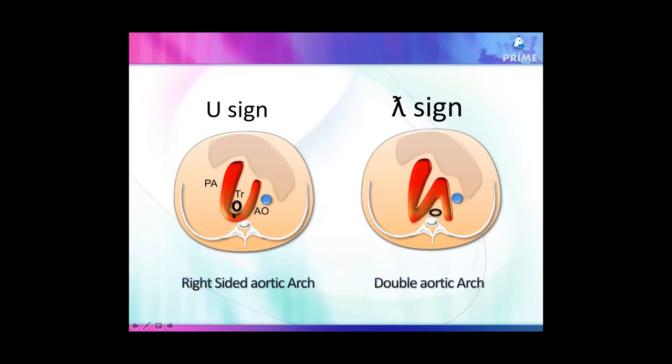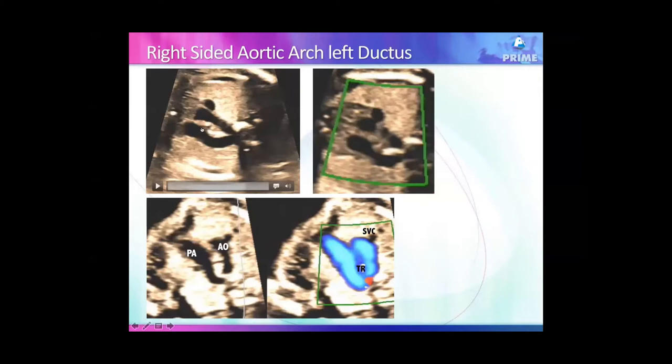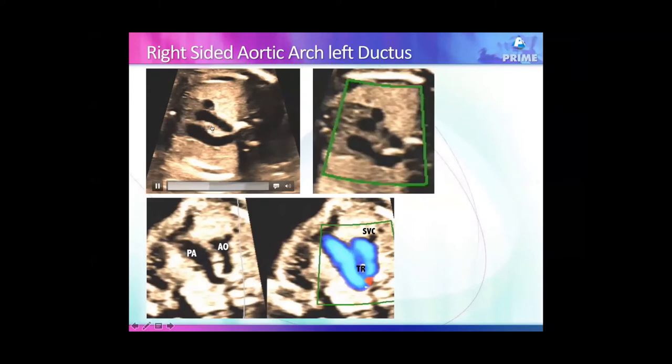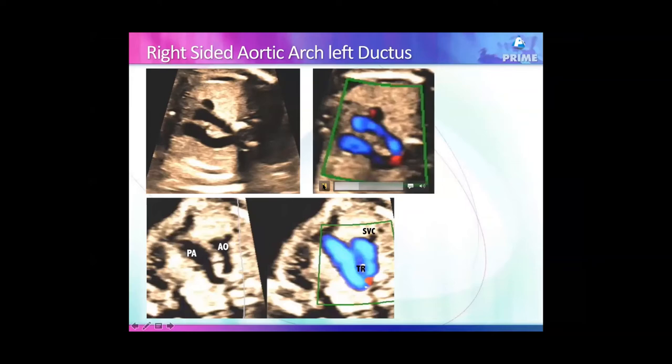Right-sided aortic arch or double aortic arch is decided by the position of the trachea in the three-vessel view. In right-sided aortic arch, the trachea is in the middle and the aorta, which should be on the left, is instead on the right side of the trachea.